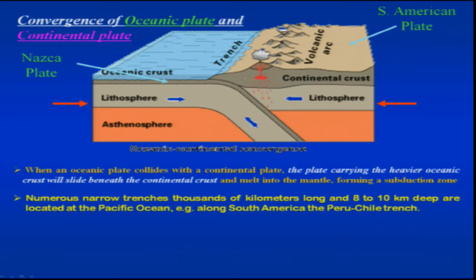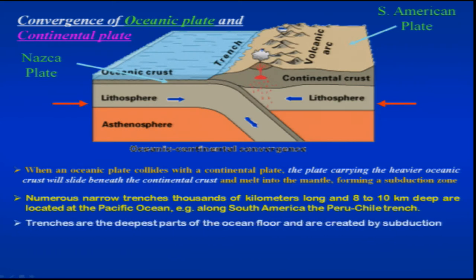One of the best examples is the Mariana Trench — numerous narrow trenches thousands of kilometers long and about 8 to 10 kilometers deep. The Mariana Trench is located in the Pacific Ocean. Trenches are the deepest parts on the ocean floor, just as Mount Everest is the highest point on the surface. The deepest part, Mariana Pass, is usually seen along subduction zones.